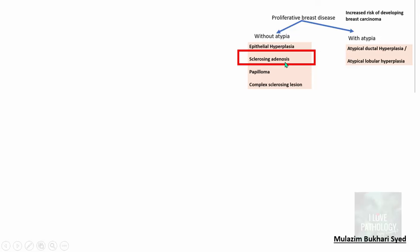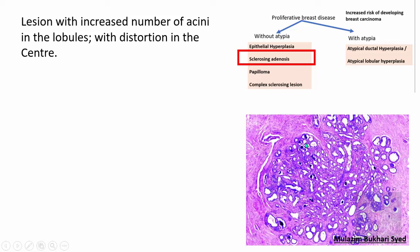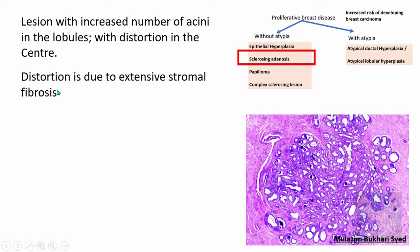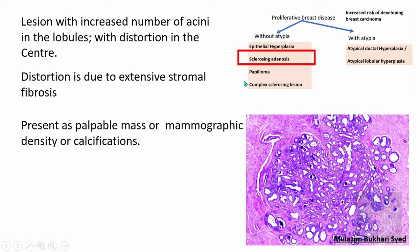Sclerosing adenosis is a lesion with an increased number of acini in the lobules. Within a given lobule you find increased acini — this is adenosis. However, there is distortion at the center due to extensive stromal fibrosis, which is why this lesion is called sclerosing adenosis. These lesions often present as palpable masses, mammographic densities, or calcifications.